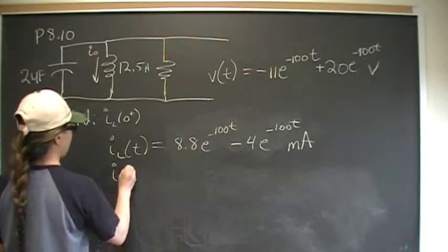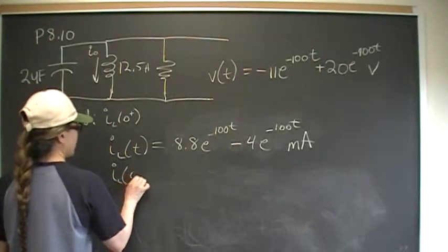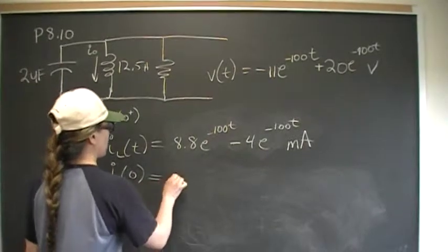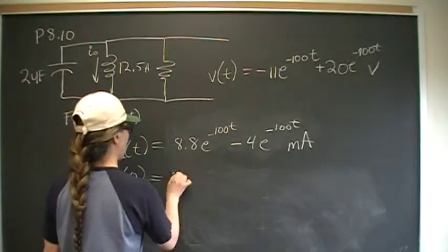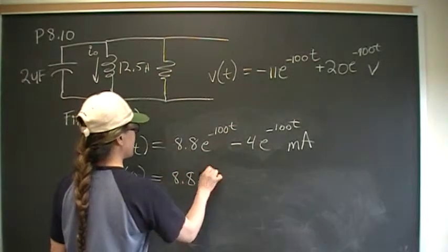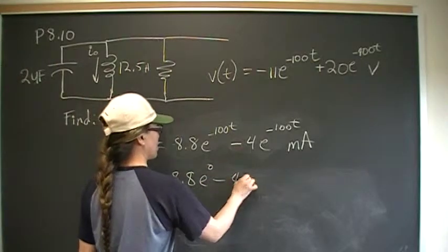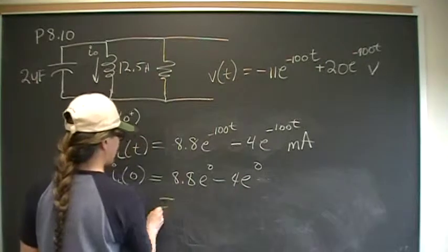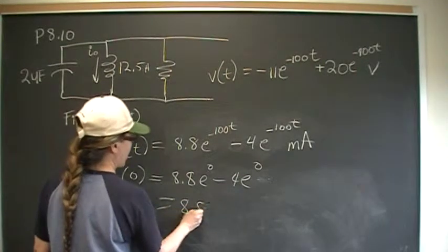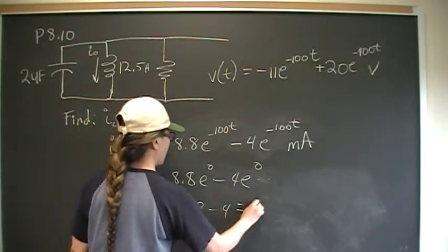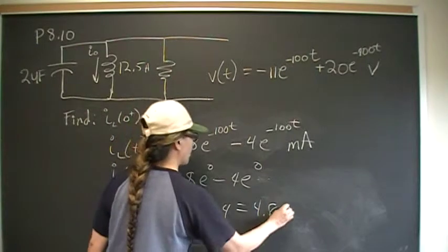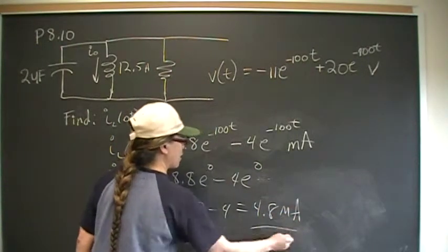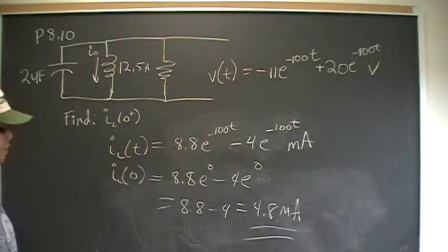So, I_L of zero is equal to, put a zero in there, 8.8e to the zero minus 4e to the zero milliamps, and that is 8.8 minus 4, 4.8 milliamps. The end.